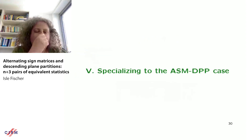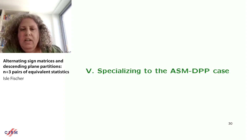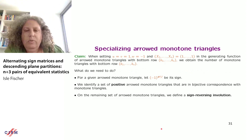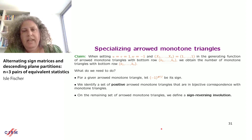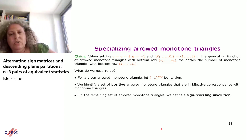Now I want to show how the ASM/DPP relation follows as a special case of the main result. We specialize by setting u=1, v=1, all x_i=1, and w=−1. I claim that the generating function of arrowed monotone triangles under this specialization equals the number of monotone triangles with the same bottom row. The weight specializes to a sign: (−1) to the number of double arrows.